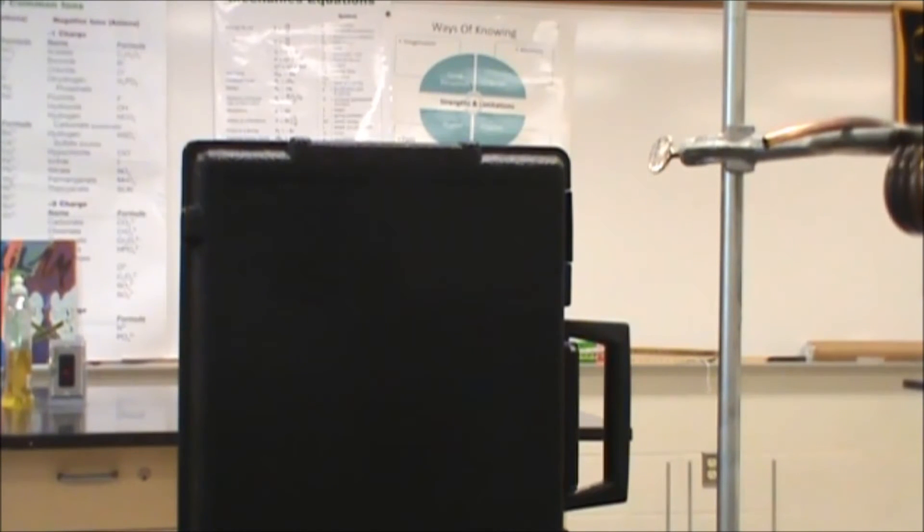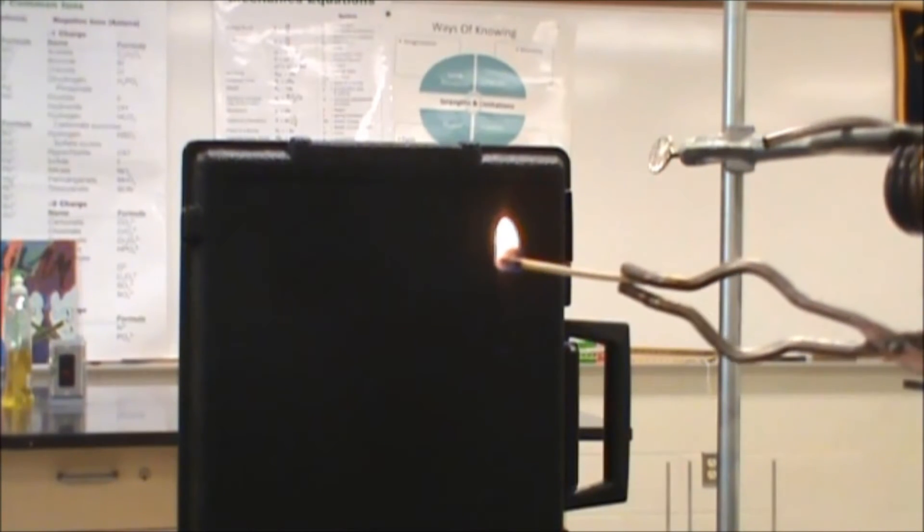To get it to ignite we need something that has a little bit lower of a flash point than paper, which we do. So first of all here is a match. The match has phosphorus in it, so when the phosphorous gets struck by that really, really hot steam, then we can go ahead and create fire using water.